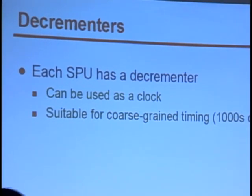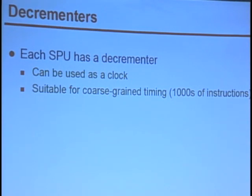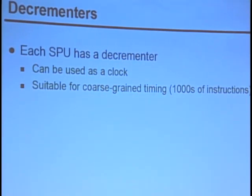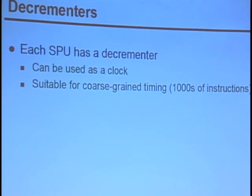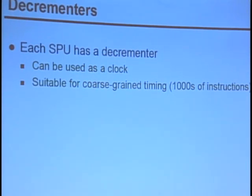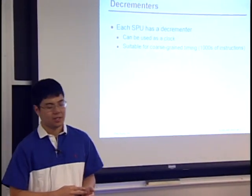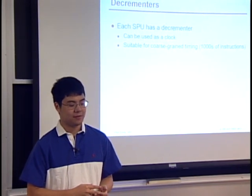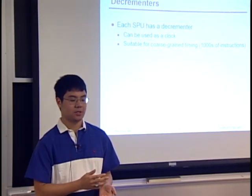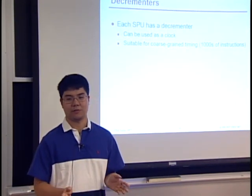The next thing we'll cover is using decrementers to profile your program. This is one way you can use dynamic profiling which actually doesn't require the simulator, so you can run these programs on your actual cell hardware. Basically, the decrementer is just a counter that counts down at a constant rate, so you can use it as a clock to figure out how long different events are lasting. The rate at which the decrementer counts down is not that fast, so you're not going to be able to use it to time things on the order of a few clock cycles. It's best for timing things which are maybe on the order of thousands of instructions in length.